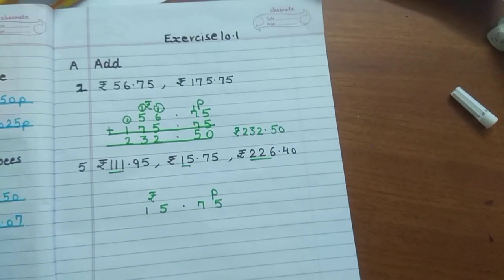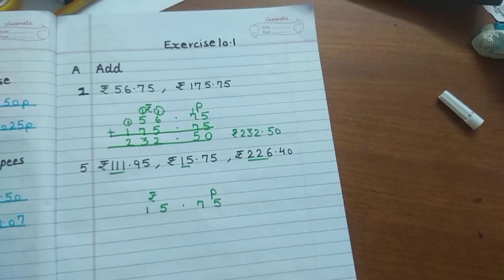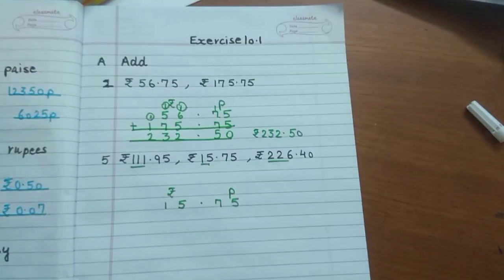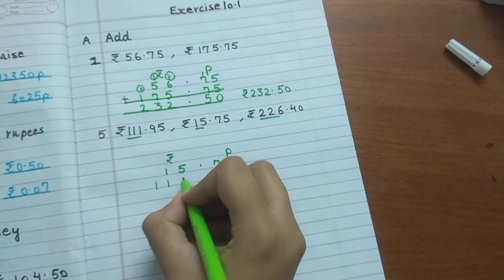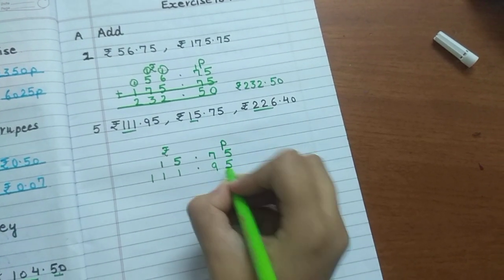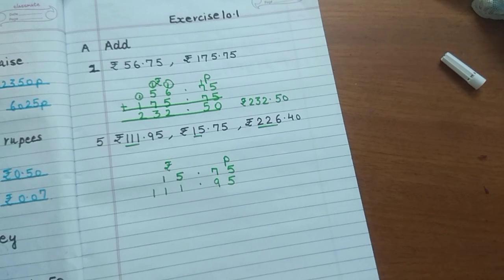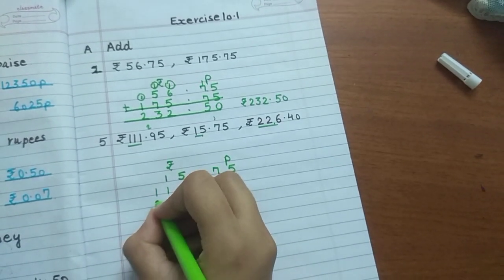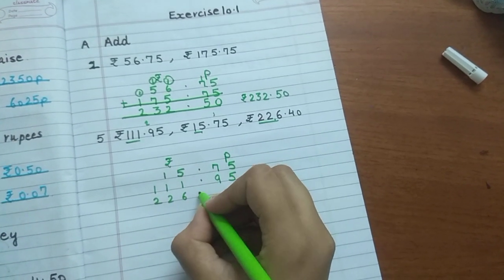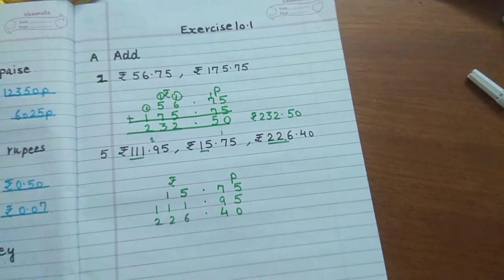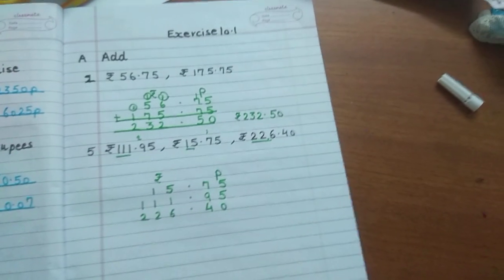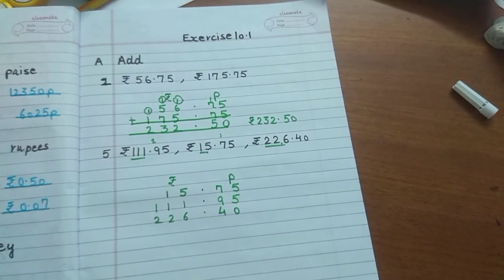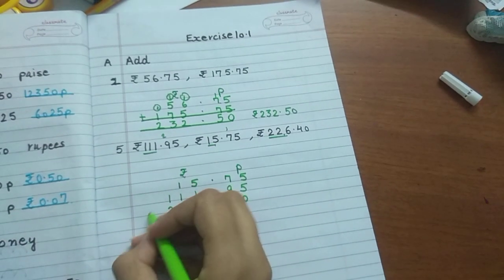So first we will write down rupees, paise. First write the smallest: 15 rupees 75 paise. Then next is 111.95, so 111 rupees and 95 paise. Then the highest amount is 226 rupees and 40 paise. And do it neatly please. Write the numbers clearly and neatly. Only then your answer will be correct. Put the addition sign.